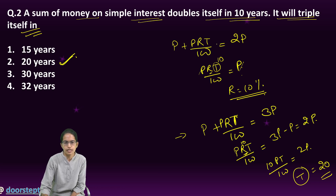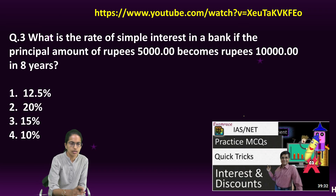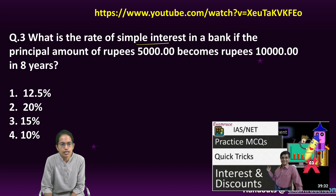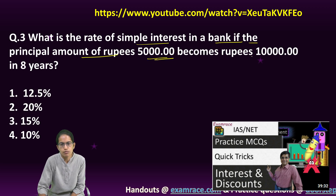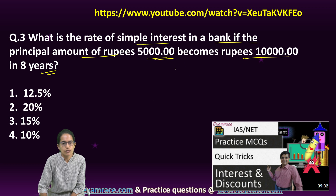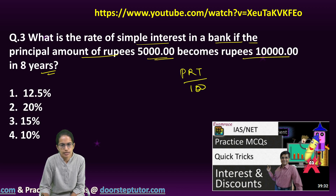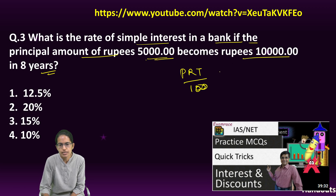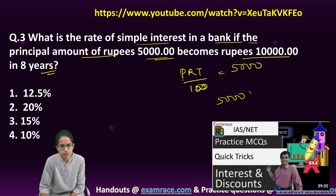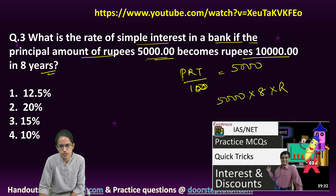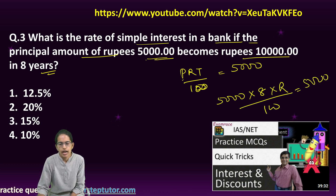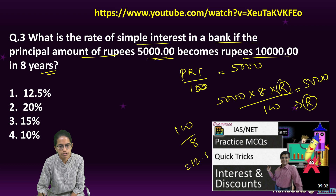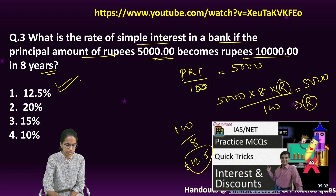The next question: what is the rate of simple interest in a bank if the principal amount of 5000 becomes 10,000 in 8 years? PRT/100 is the simple interest. The simple interest earned would be 10,000 minus 5,000, which is 5,000. So: 5000 × 8 × R / 100 = 5000. Solving for R gives 100/8, which is 12.5 percent. A very direct question.